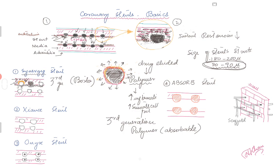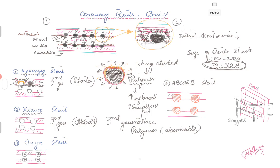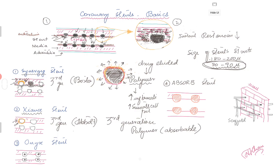Then you have stent number two, which is Xience. It's also a third generation stent made by Abbott. Again, these are very thin stent struts coated with a polymer. Over the period of time the polymer dissolves and the drug is eluted. The drug they use is called everolimus, which is an analog of sirolimus. Synergy also uses everolimus.